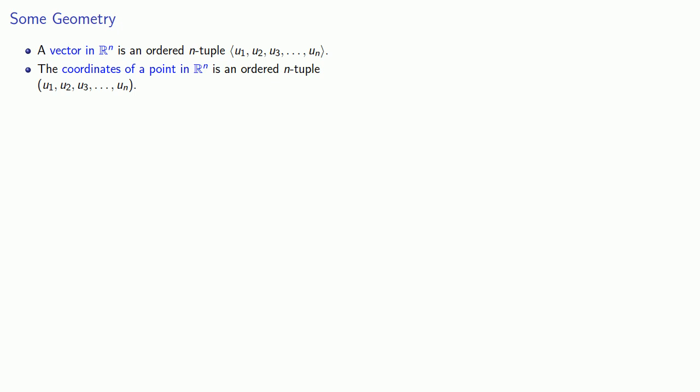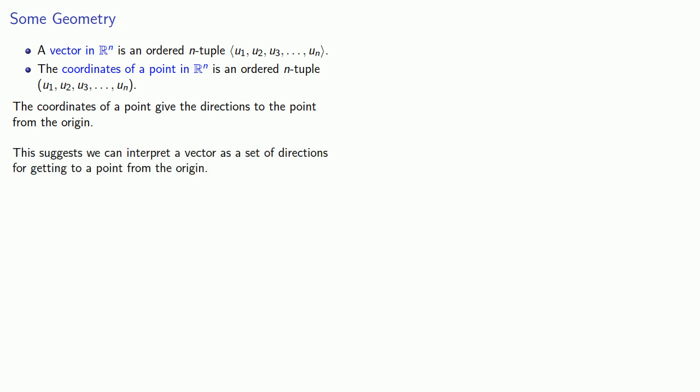And the fact that vectors and coordinates look so very much alike suggests the following line of reasoning. The coordinates of a point give the directions to the point from the origin. And this suggests that we might be able to interpret a vector as a set of directions for getting to a point from the origin.